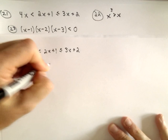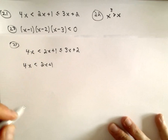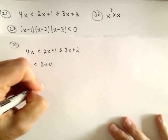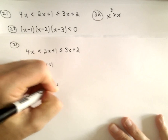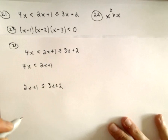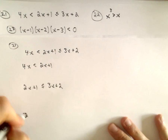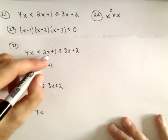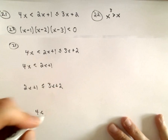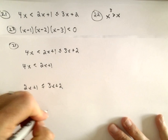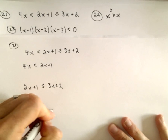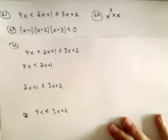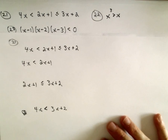You've got 4x less than 2x plus 1. You've got to solve the inequality 2x plus 1 less than or equal to 3x plus 2. And then we also have to solve the inequality where 4x has to be less than 2x plus 1, which is less than or equal to 3x plus 2 — so 4x would have to be less than 3x plus 2. That's basically what's going on here.